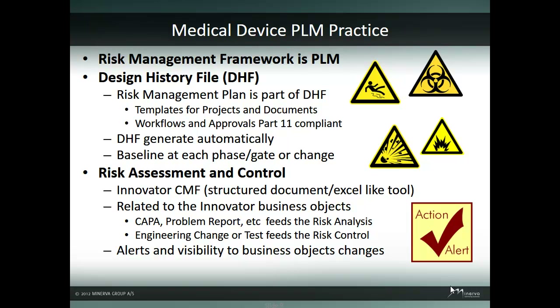As the business objects change, the risk assessment can receive alerts and updates. For example, when a problem report is created, it can be linked to a harm. In order to reduce this harm, an engineering change can be created from the risk assessment control document and tracked to implementation, reducing the harm's overall risk with a new severity or occurrence.